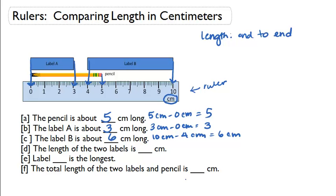The length of the two labels is blank centimeters. Label A is 3 centimeters long and label B is 6 centimeters long. Adding those together gives a total of 9 centimeters. Label blank is the longest — label B is 6 centimeters and label A is 3 centimeters. Since 6 is greater than 3, label B is the longest.